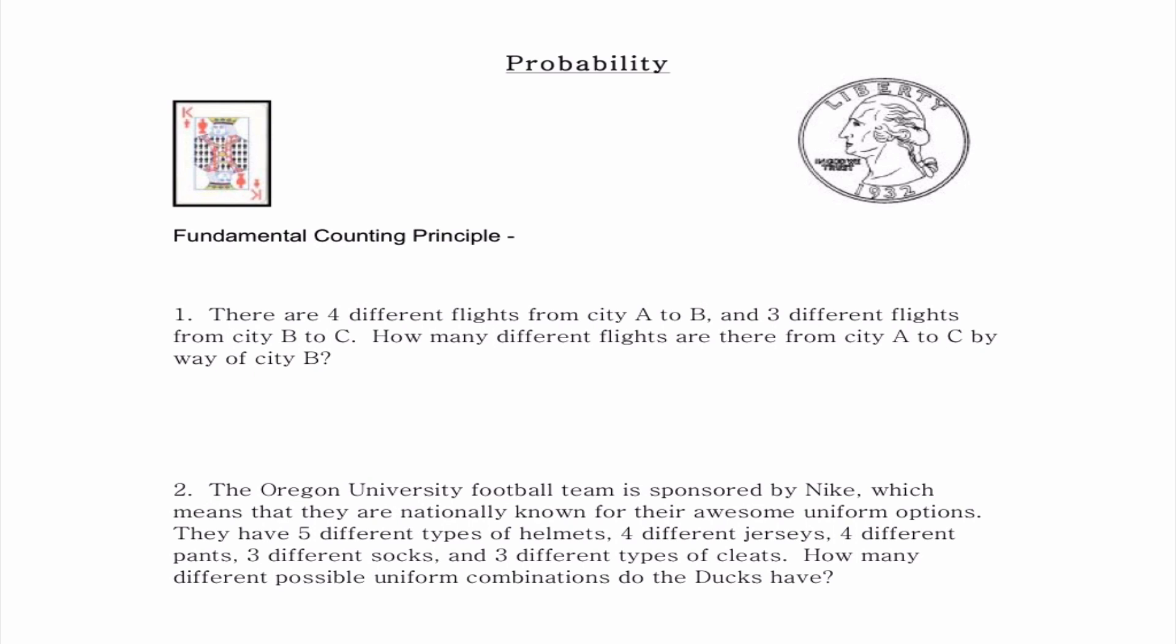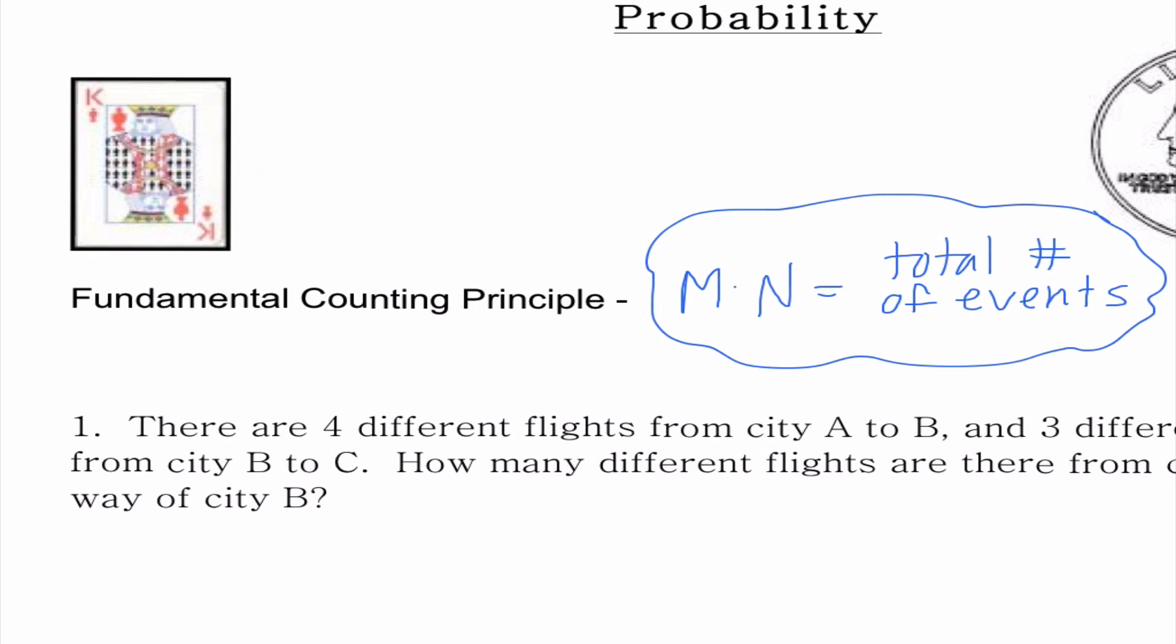Today we're talking about what we call the fundamental counting principle. When we hear this word fundamental, it means that it is something that's super important. And often we think that things that are important are really difficult, but the good news is that what we're learning is actually really straightforward. The fundamental counting principle is M times N, and these are what we call independent events. The outcome of one event does not affect the outcome of the other event. If we have two different events, then we multiply the options and that gives us the total number of events.